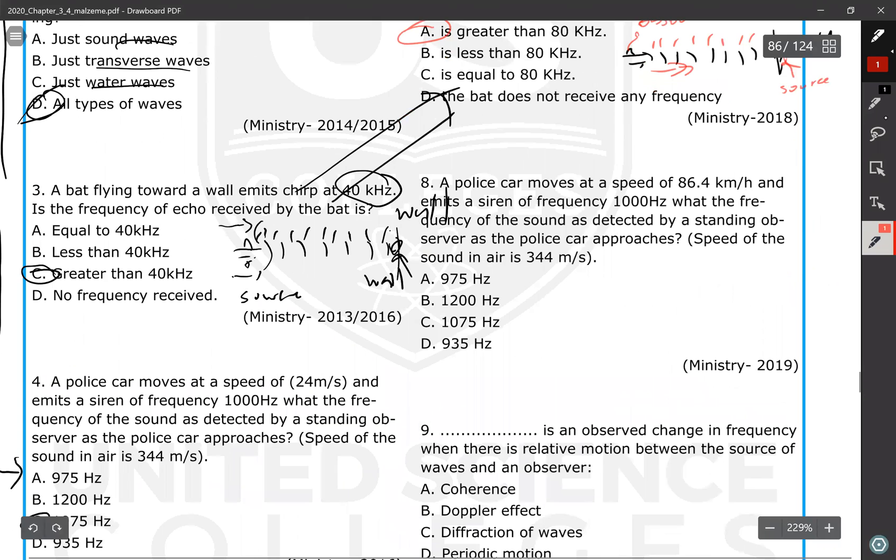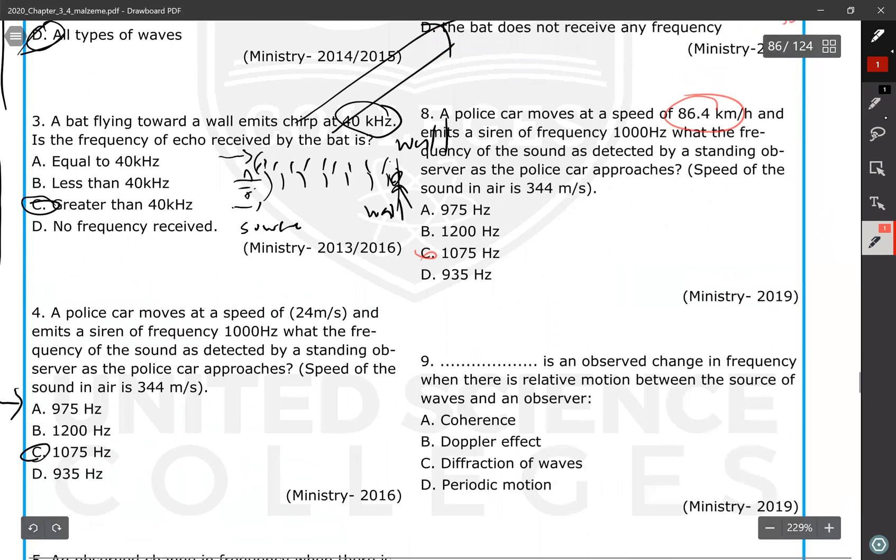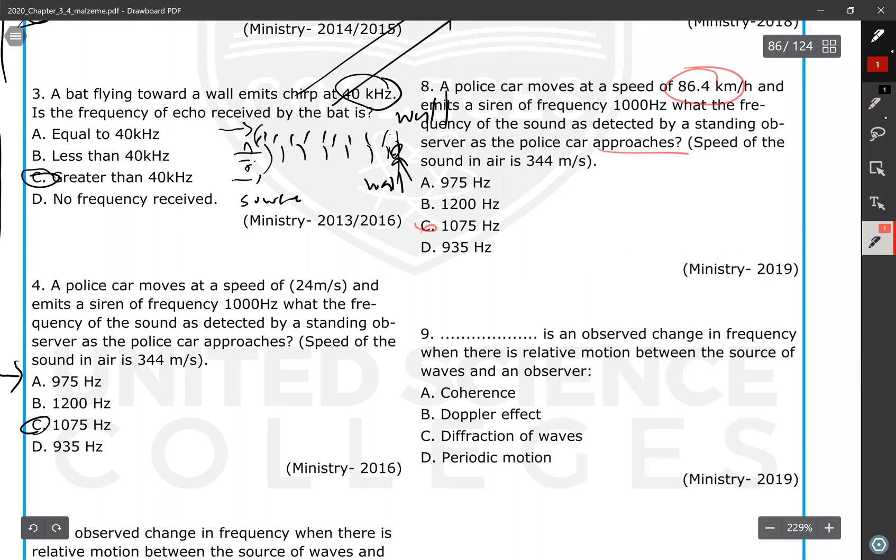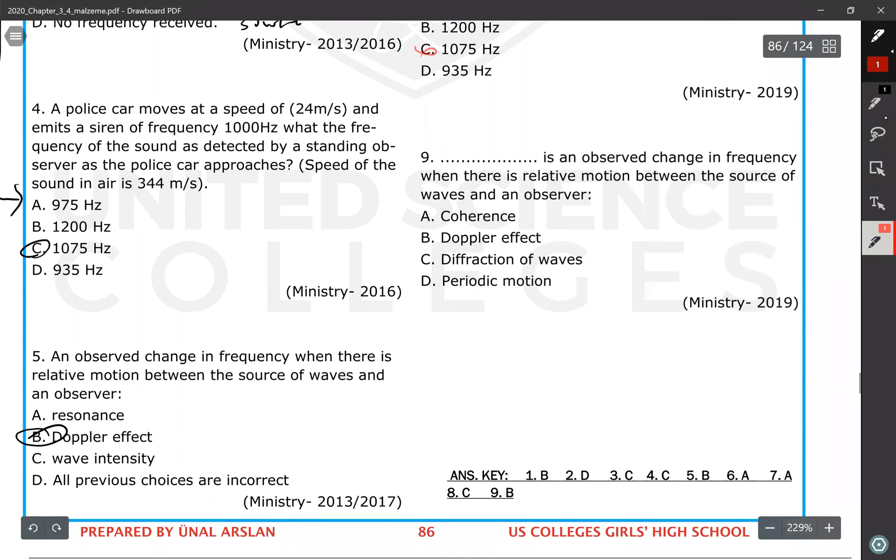A police car moves at a speed of 86.4 kilometer per hour. Same question as number four - only the number has changed. So the choice is going to be C again. We have the same formula. It's still approaching. Question number nine: an observed change in frequency when there's a relative motion between the source of the waves and observer - it's Doppler effect. The answer to this question is Doppler effect.